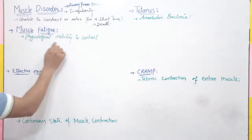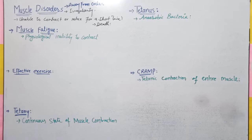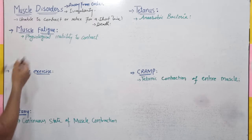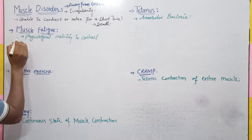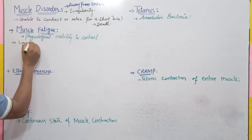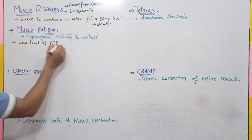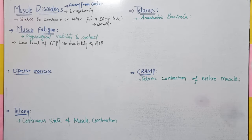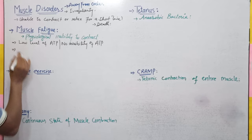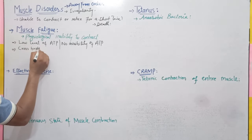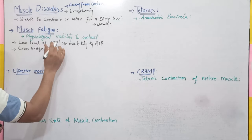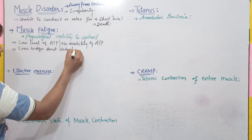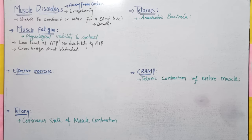Muscle fatigue kya hai? Physiological inability to contract — muscle ke andar ability nahi rehti ke wo contract kar sake. Yeh condition tab aati hai jab low level of ATP ho, ya we can say no availability of ATP. Muscle ko ATP hi nahi mil rahi, jis ki wajah se cross bridges — jo meine previous lecture mein padhaye hain — detach nahi ho paate, jis ki wajah se muscle fatigue aana start ho jaati hai.